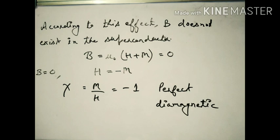According to the Meissner effect, B does not exist inside the superconductor, so B equals zero. We know B equals μ₀(H + M). Since B is zero, H equals minus M, and the susceptibility χ equals M/H equals minus 1, which is the case of a perfect diamagnet.